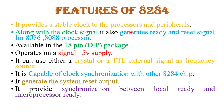Now the features of the 8284 clock generator. It produces a clock signal for the 8086 or 8088 microprocessor and other peripheral devices, and generates ready and reset signals. It is available in an 18-pin DIP — Dual Inline Package — and operates on a plus 5V DC supply. It can use either a crystal or a TTL external signal as a frequency source. It is capable of clock synchronization with other 8284 chips, generates the system reset output, and provides synchronization between local ready and microprocessor ready.